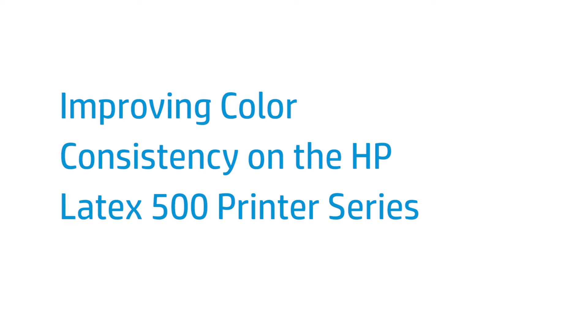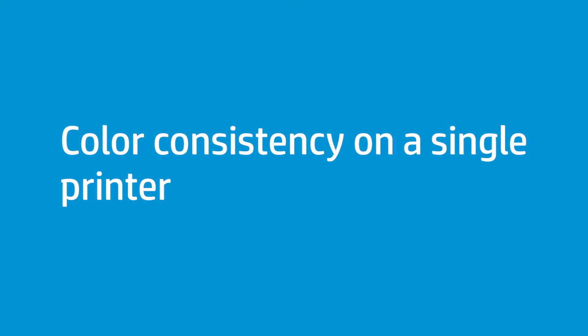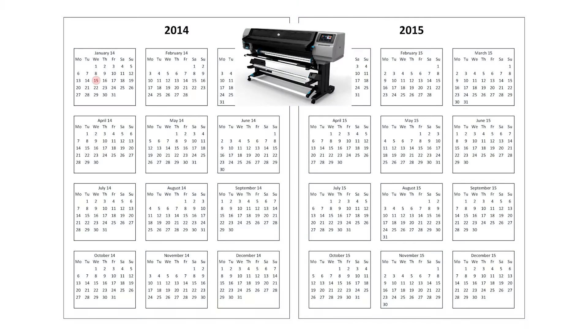This video shows how to ensure colour consistency between prints for a specific media profile on the HP Latex 500 printer series. Colour calibration is used to produce consistent colours with the specific printheads, inks and substrate that you are using in your particular environmental conditions. After colour calibration, you can expect to get similar prints from your printer with each print job.